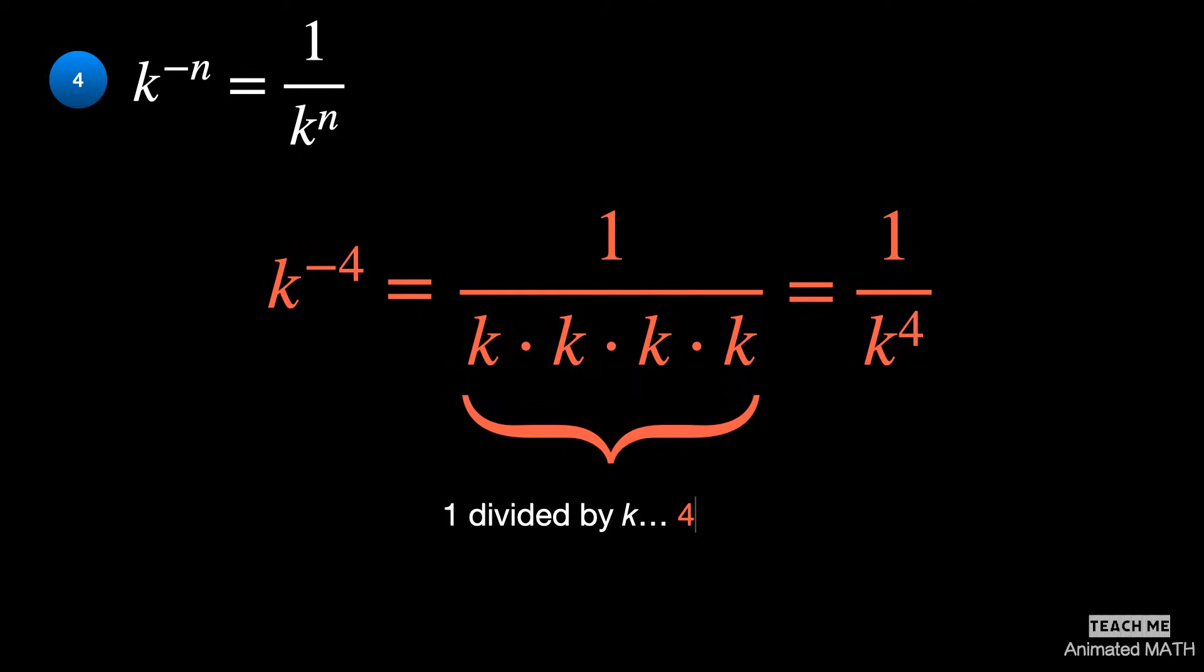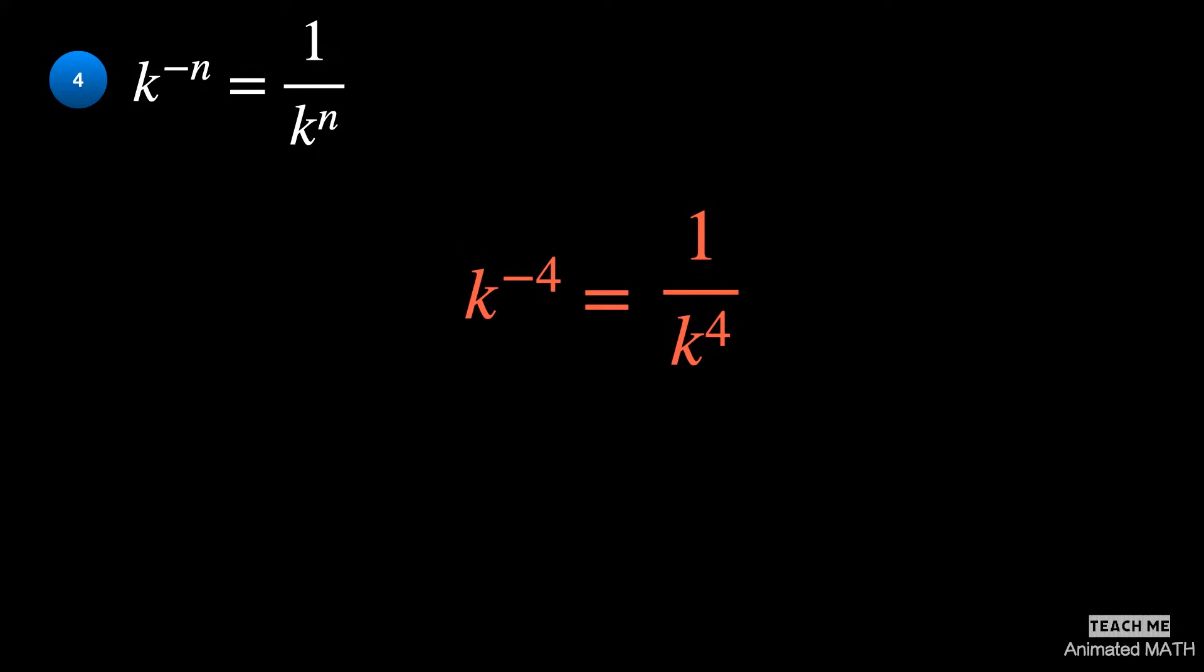Here is an example. k to the negative 4 is equal to 1 divided by k k k k, or 1 over k to the 4th.